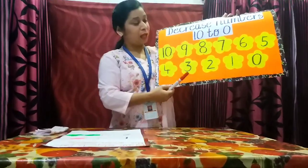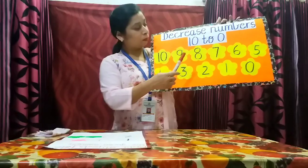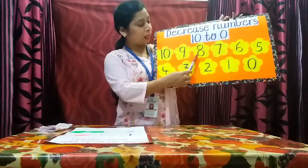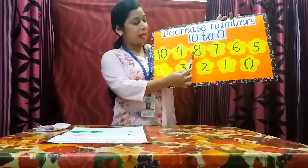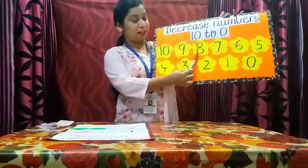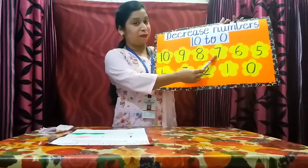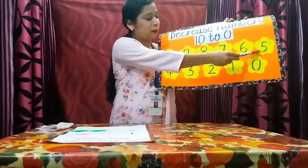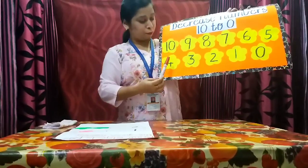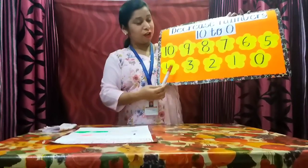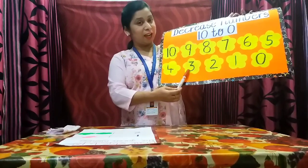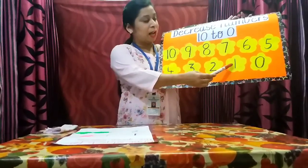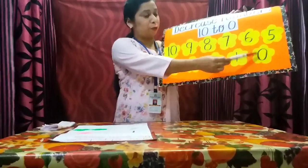You can also count from between, like: 8, 7, 6, 5, 4, 3, 2, 1, 0.